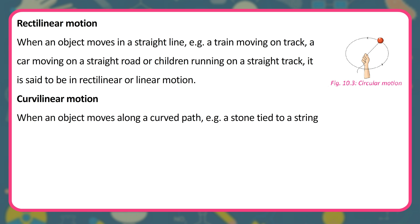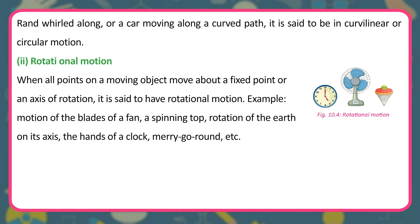When an object moves along a curved path, for example a stone tied to a string and whirled along, or a car moving along a curved path, it is said to be in curvilinear or circular motion. When all points on a moving object move about a fixed point or an axis of rotation, it is said to have rotational motion. Examples include: motion of the blades of a fan, a spinning top, rotation of the earth on its axis, the hands of a clock, merry-go-round, etc.